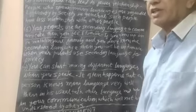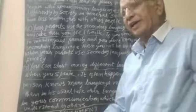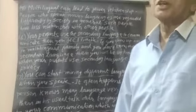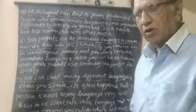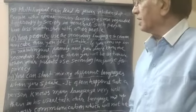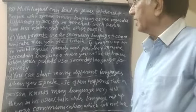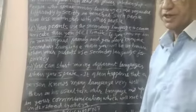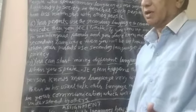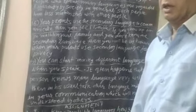Fifth point: multilingualism can lead to fewer relationships. A person who knows many languages is not always liked by general people. People who speak many languages are regarded differently by society — society sees them differently. Others don't like to make friendships with such a person, so the multilingual person becomes isolated and ends up with very limited, fewer relationships.